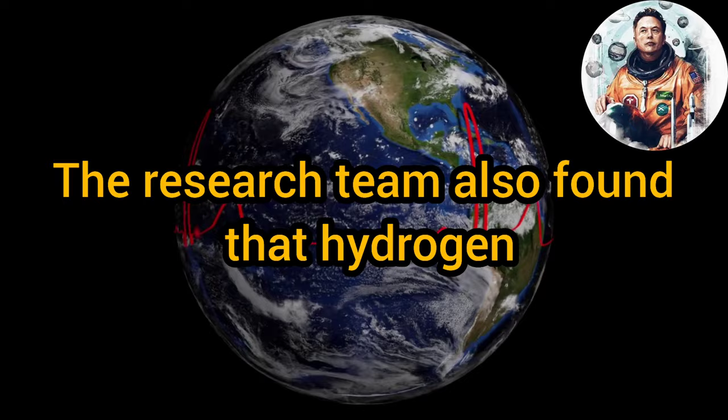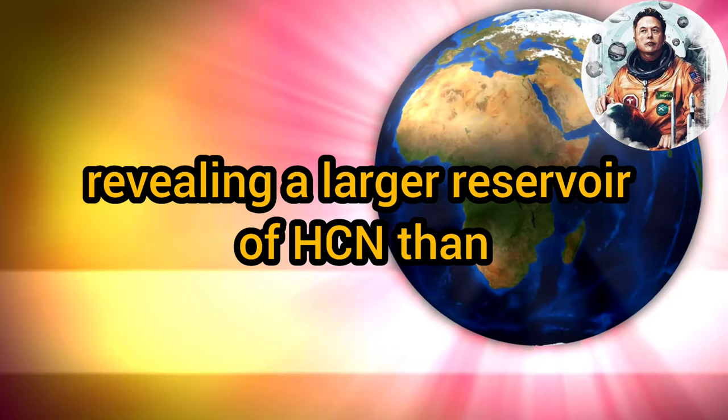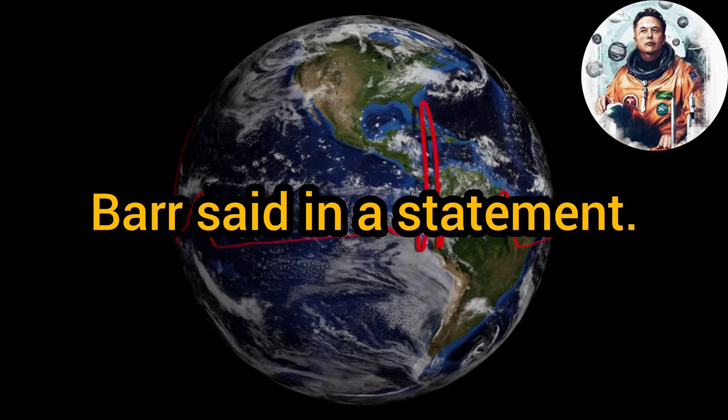The research team also found that hydrogen cyanide was abundant in a specific part of Titan's upper atmosphere. It was three times higher than previous observations had shown, revealing a larger reservoir of HCN than previously believed. This is an important finding as it implies a potentially richer supply of HCN than previously thought. HCN is one possible building block for more complex molecules and even biochemicals like amino acids, which are key to the origin of life.